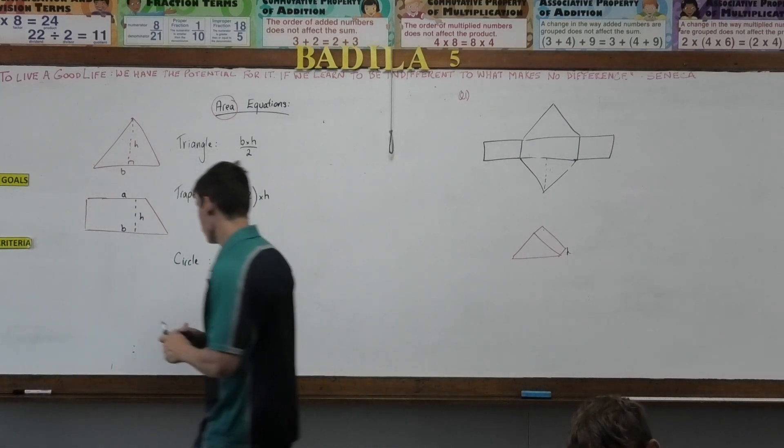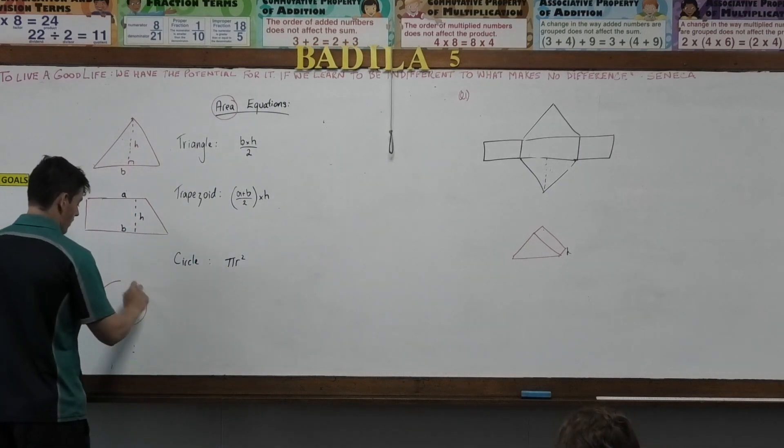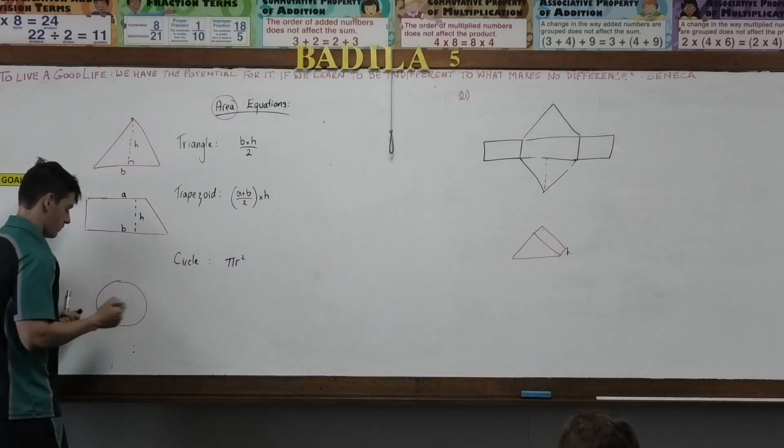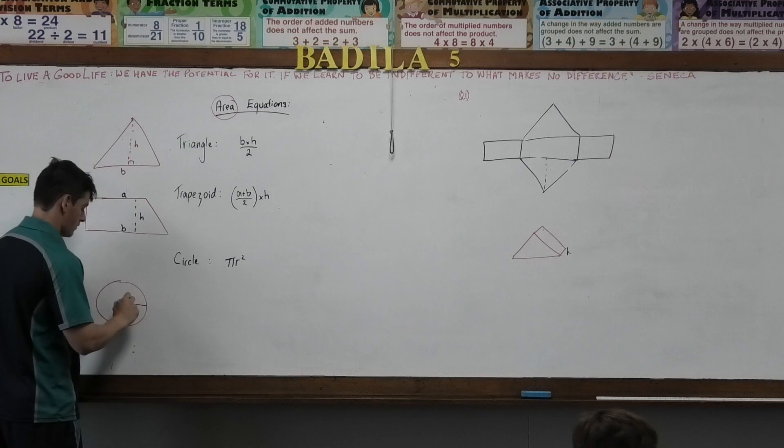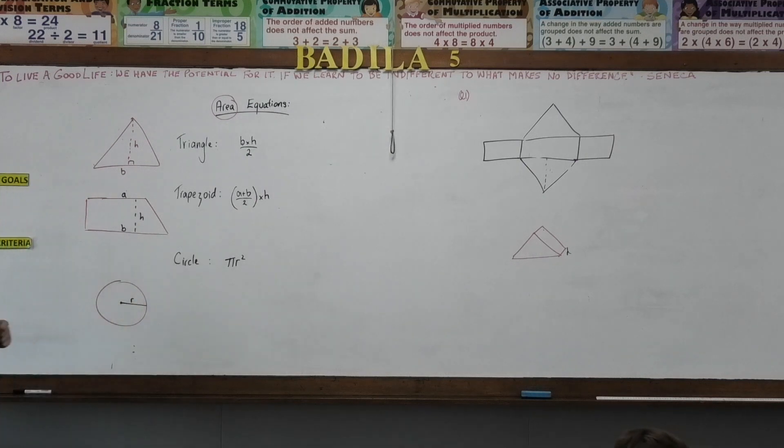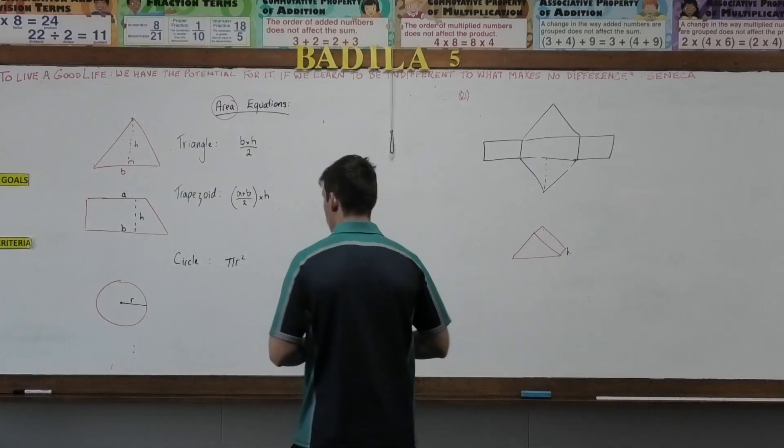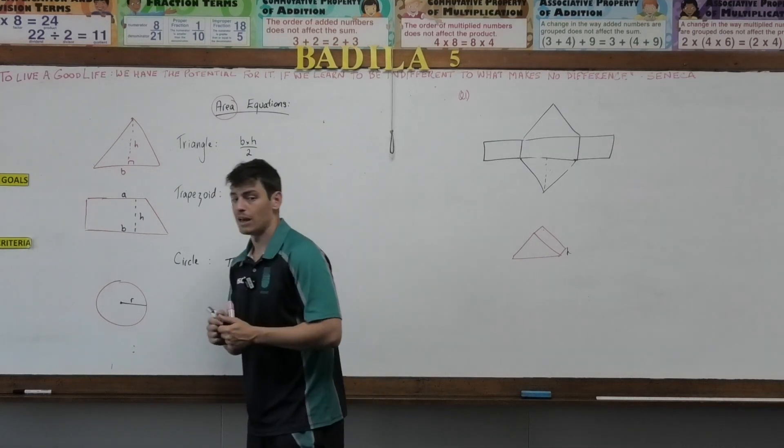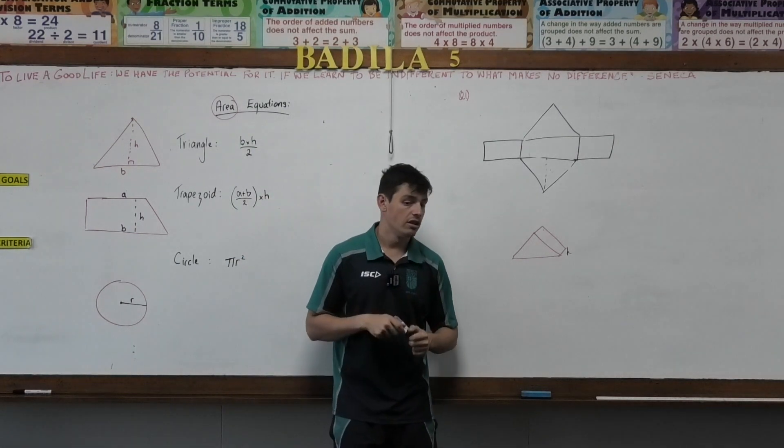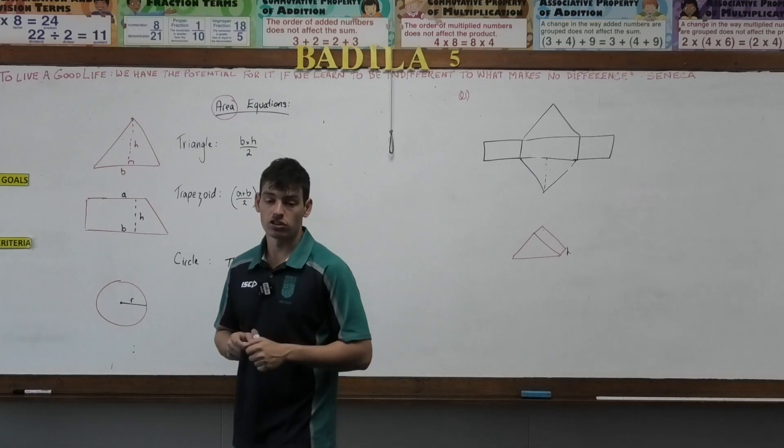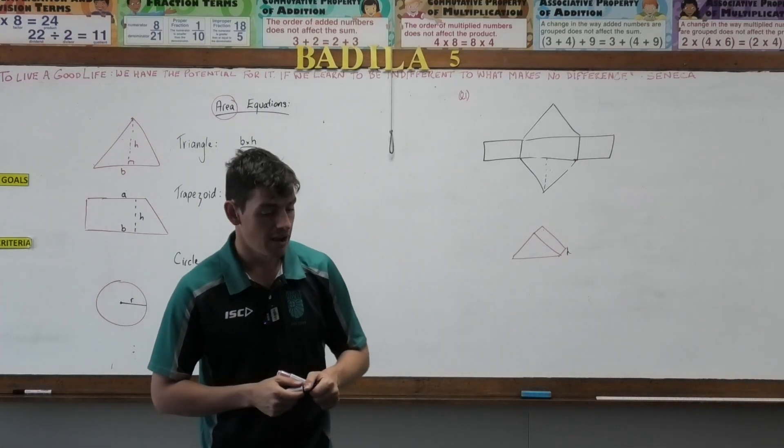And obviously with our circle, there is only one thing in a circle. Our radius. Be aware, if they give us a diameter, what do we need to do? Divide it by two. And with pi, you can find that by hitting shift, and I think it's 10 to the power of. So shift 10 to the power of, then the bottom there, and that will give you your pi.